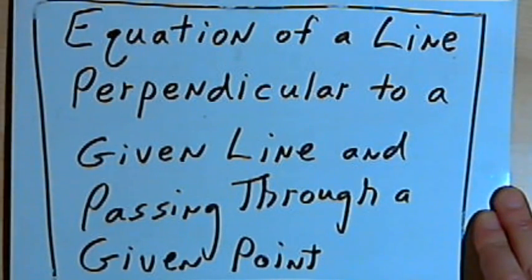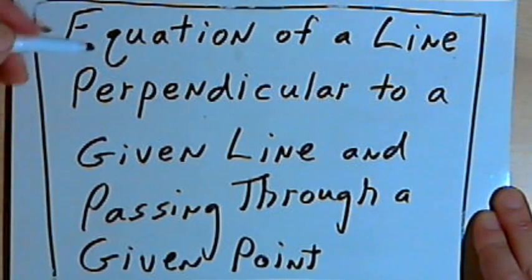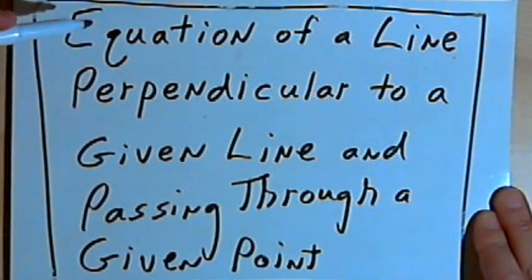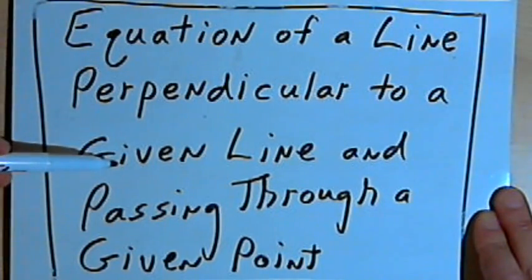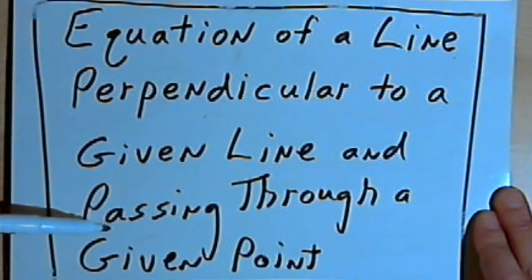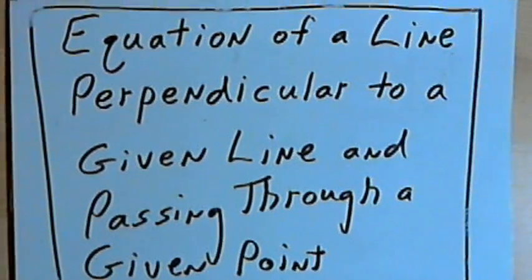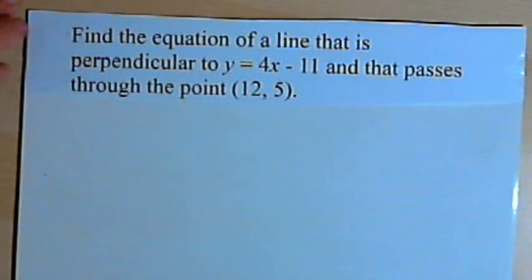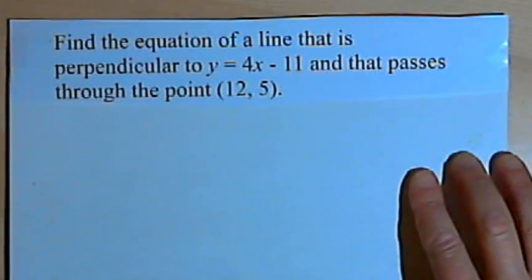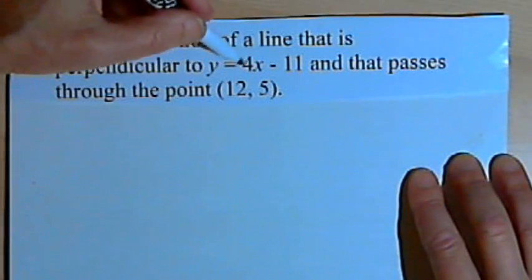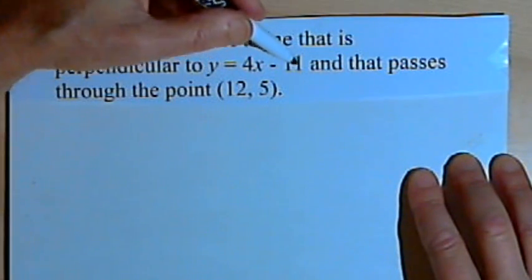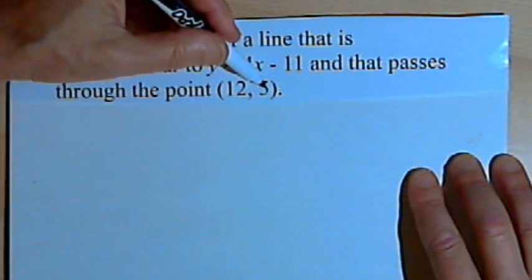This video is provided as supplementary material for courses taught at Howard Community College. In this video, I'm going to talk about finding the equation of a line that is perpendicular to a given line and that passes through a given point. Here's our example: find the equation of a line that is perpendicular to y equals 4x minus 11 and that passes through the point (12, 5).